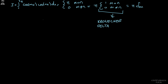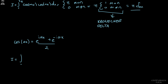Now let's quickly solve this integral using the complex exponential method to confirm we get the same result. Recall that cosine(ax) can be written in complex exponential form as [e^(iax) + e^(−iax)] / 2. Substituting this into the integral for both cosine(mx) and cosine(nx), and noting that each brings a factor of one-half, we get a one-fourth out front. The integrand becomes [e^(imx) + e^(−imx)] times [e^(inx) + e^(−inx)] dx, integrated from 0 to 2π.